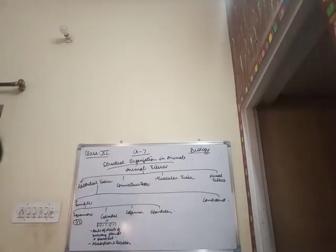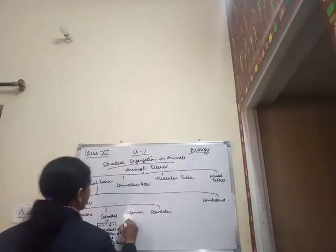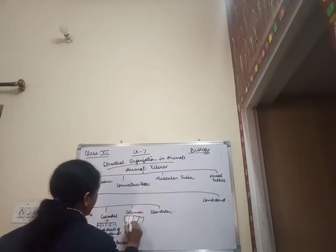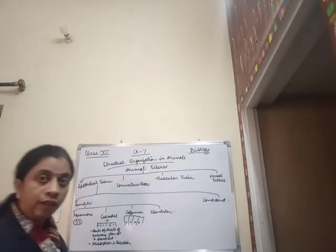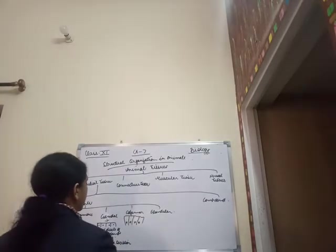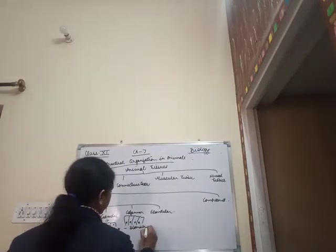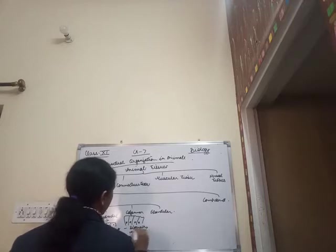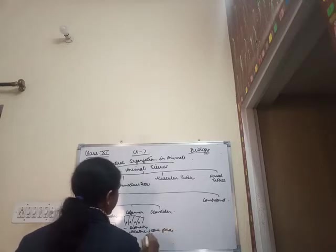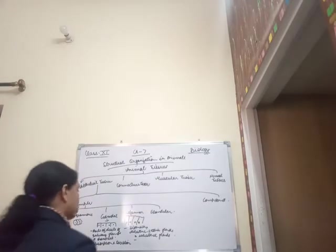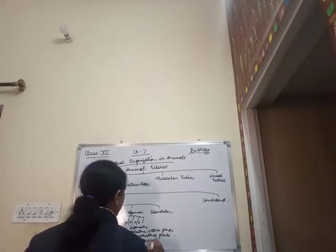The cells of the columnar epithelium appear as long pillar-like structures having an oval nucleus at the base of each cell. These are present in the lining of the stomach, intestine, gastric glands, and intestinal glands. Their main function is absorption and secretion.